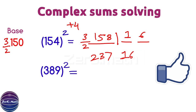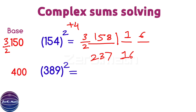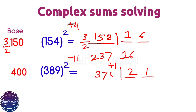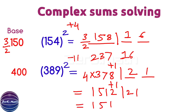To find 389 squared, the base is 400. 400 minus 11 is 389, and 11 squared is 121. We write 21 and carry 1. Then 389 minus 11 equals 378. Since base 400 is 4 times 100, we multiply 378 by 4 to get 1512, then add the carry of 1 to get 1513. So the answer is 151321.